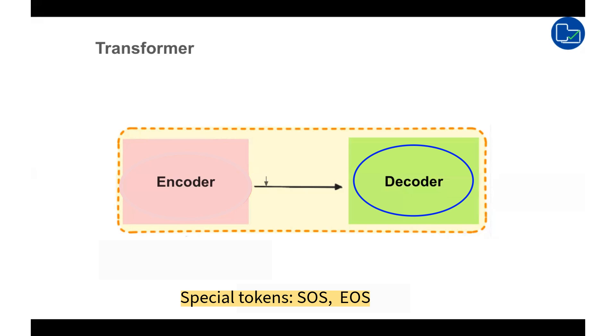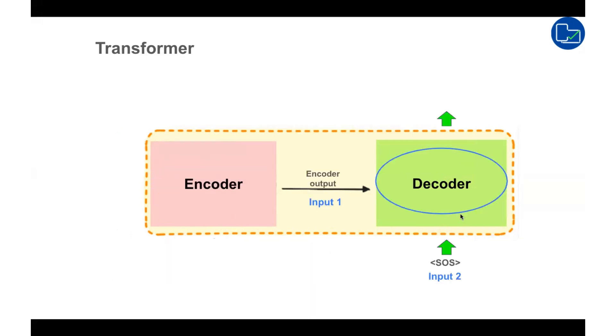These are like the traffic signals to the model which instructs when to start generating the output and when to stop generating the output. The decoder starts by receiving the SOS token as one of the input and encoder output as another input.